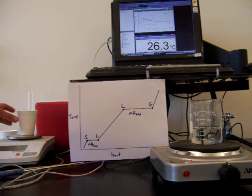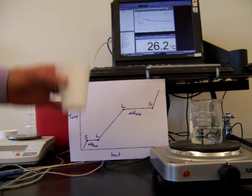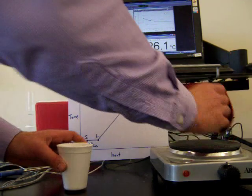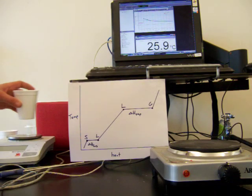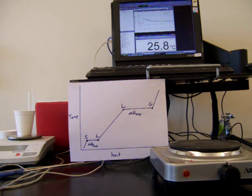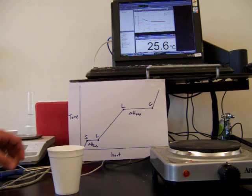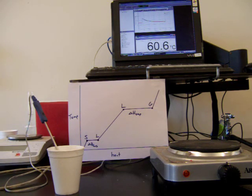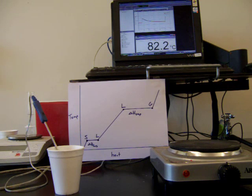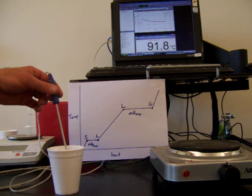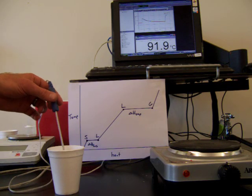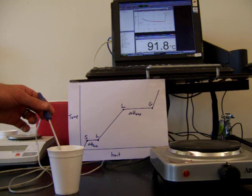We'll do the heat of fusion experiment first. I have a calorimeter, which is just a simple styrofoam cup, and I'm going to put some warm water into it. It doesn't matter exactly how much water I put, but I will find its exact mass. Back on my balance, it has a mass of 87.39 grams. That's the initial mass of my warm water, and the temperature of my warm water is 91.9 degrees Celsius.